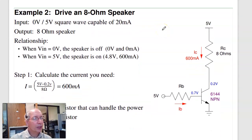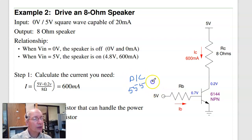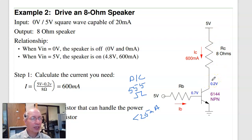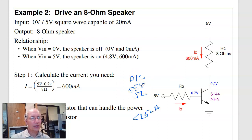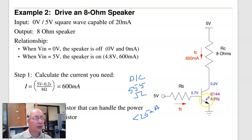I can do the same thing with a speaker. If I have something wimpy like a PIC or a 555 timer, it can do 0 or 5 volts but only up to 25 mA. With an 8-ohm speaker, 5 V at 8 Ω is 625 mA — I can't drive that with a PIC or 555 timer. So I need an electronic switch: in this case a 6144 NPN transistor, because 625 mA is more than 200 mA. Using a 3904 would blow the transistor.